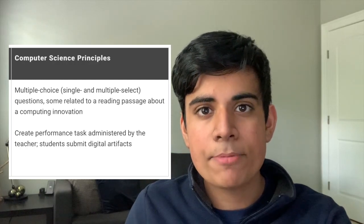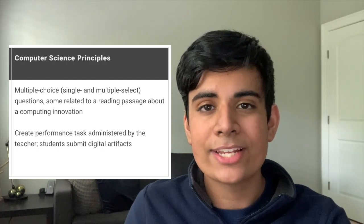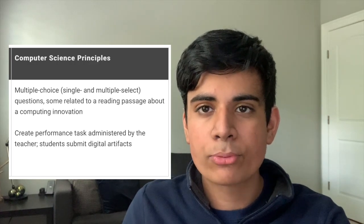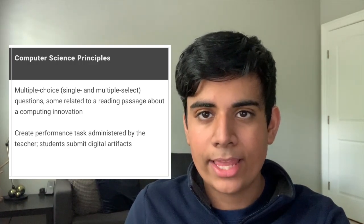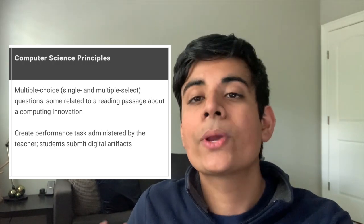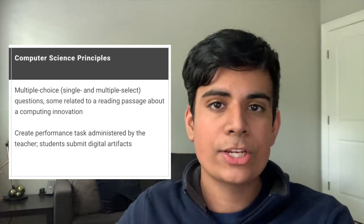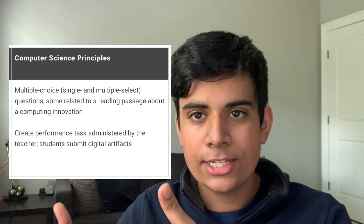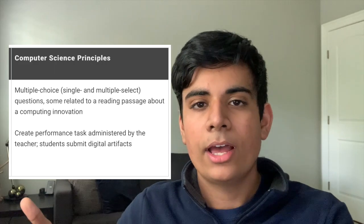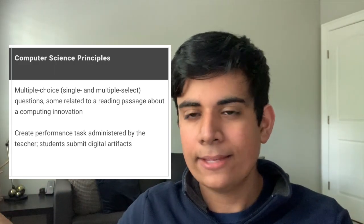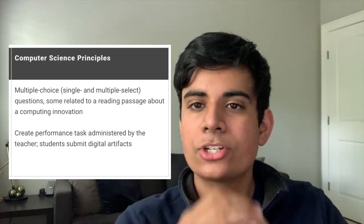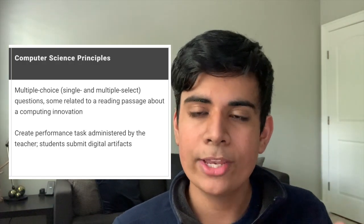In addition, Computer Science Principles has something that AP Computer Science A does not — the Create Performance Task. The Create Performance Task requires you to create a program in code, something you're interested in, in whatever language you learned in the class. You'll demonstrate that you can actually program and answer questions based on the program you made. You'll need two basic components: an algorithm in your app and some form of abstraction — essentially simplifying your code and managing its complexity.